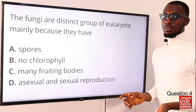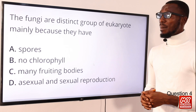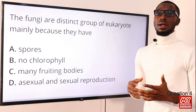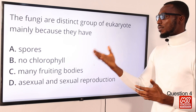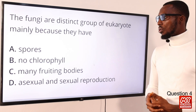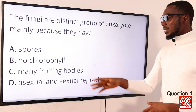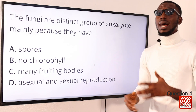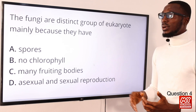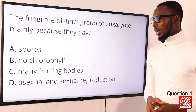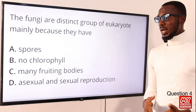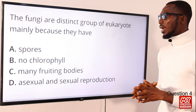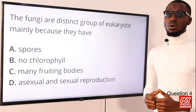Option B: no chlorophyll. This is correct because most fungi are saprophytic in nature while some are parasitic, due to the absence of chlorophyll — they have to obtain food externally. Looking at option D, asexual and sexual reproduction: this is not peculiar to fungi because it is also common among thallophytes — algae can also reproduce sexually or asexually. So the peculiar, distinct thing about fungi is the absence of chlorophyll. Option B is the correct option.